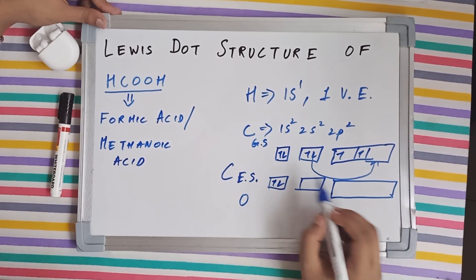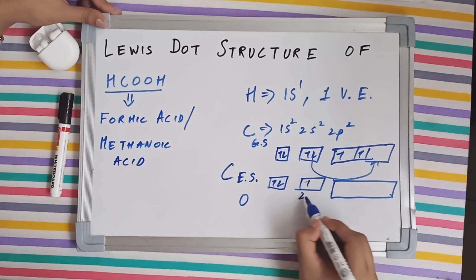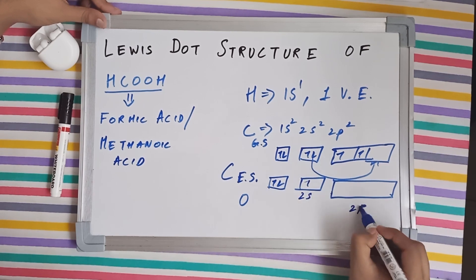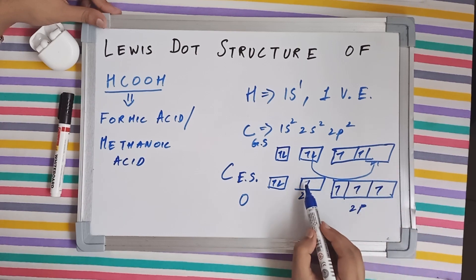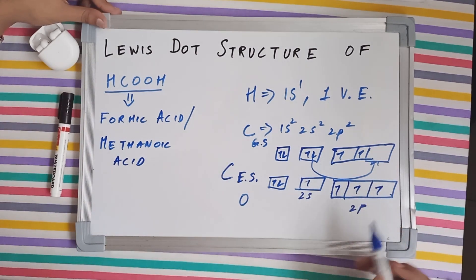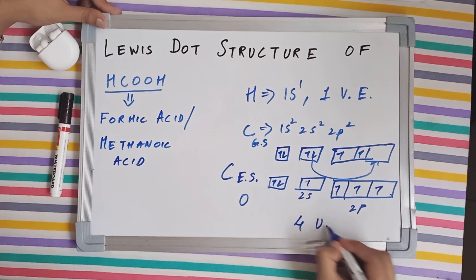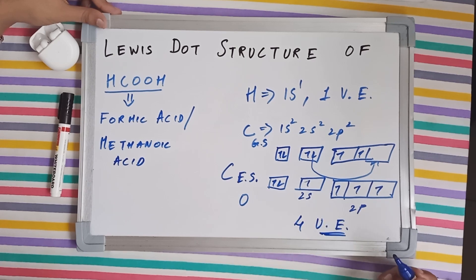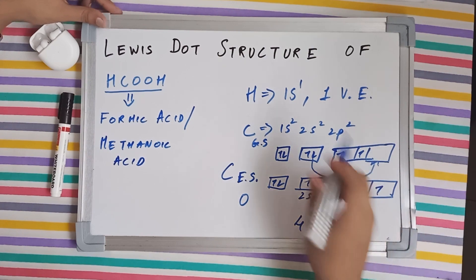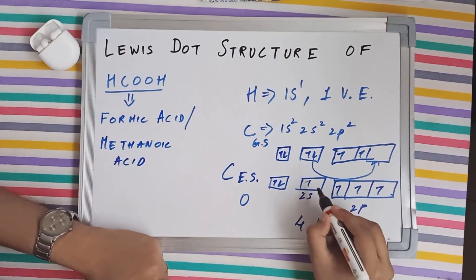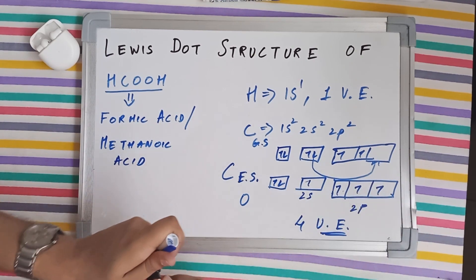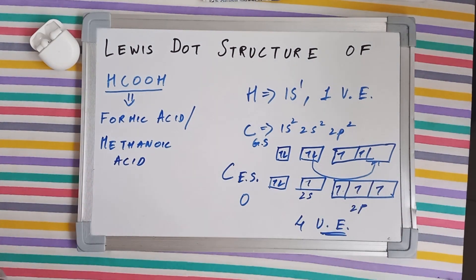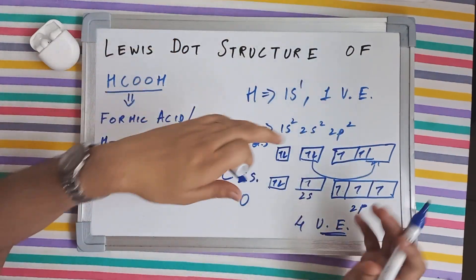This makes the orbital diagram such that 1s remains as before, now we have a single electron in the 2s subshell, and in the 2p subshell we now have three unpaired electrons. In total, carbon has four unpaired electrons, which means it will need four extra electrons from different atoms while making bonds — it will make four bonds.